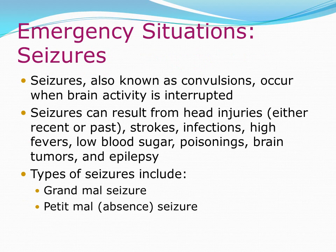Emergency situation — seizures: Seizures, also known as convulsions, occur when brain activity is interrupted. They can result from head injuries, strokes, infections, high fevers, low blood sugar, poisonings, brain tumors, and epilepsy. Types include grand mal seizures and petit mal (absence) seizures.